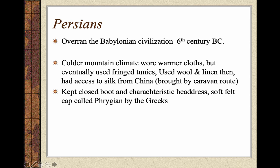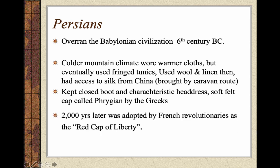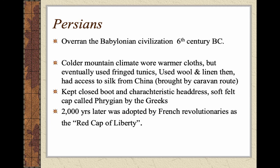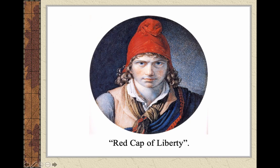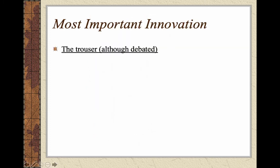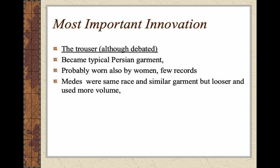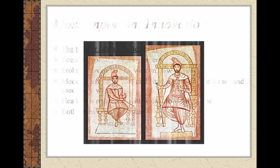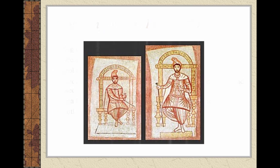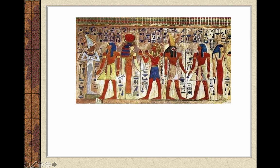The Persians wore caps called Phrygian caps by the Greeks, and interestingly, 2,000 years later, this cap was adopted by the French revolutionaries as the Red Cap of Liberty. The most important innovation was the trouser, still being debated, but it became a typical Persian garment, possibly worn by women. The Medes were the same race with similar garments but looser with more volume. They wore a headdress with a round cap — sometimes flat-crowned or a hood — worn by both sexes. Those drawings show us the looser shape of the garments. That covers the period prior to ancient Egyptian times. In part two, we will talk about ancient Egypt and Crete.